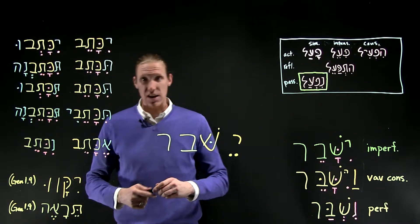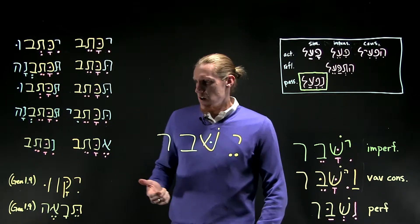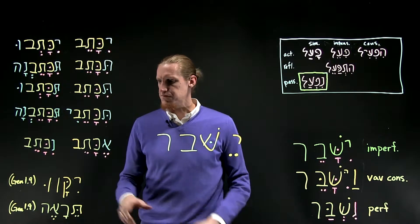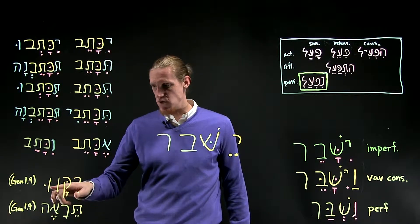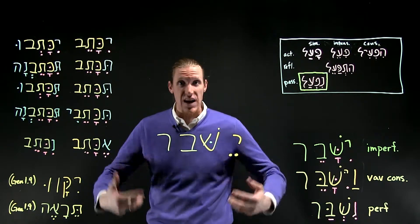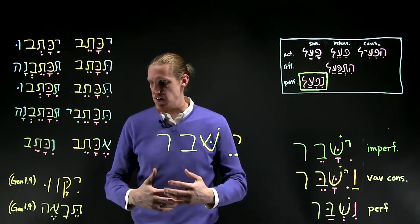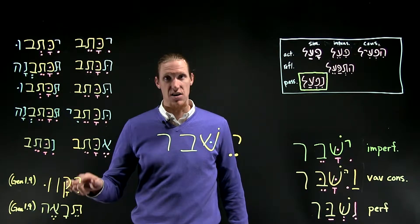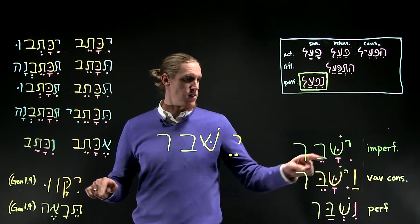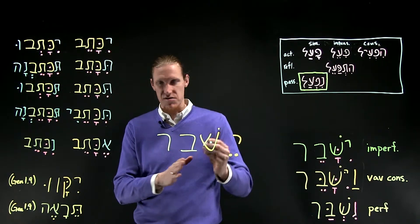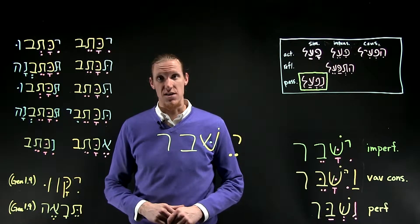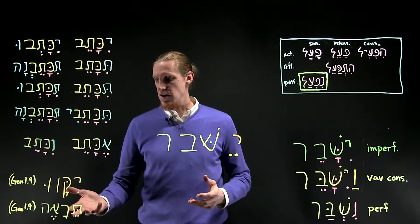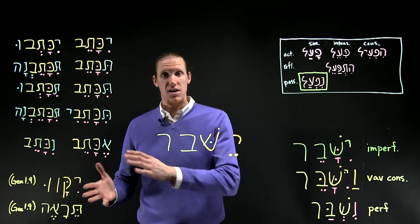Let's take a look at a couple of other examples that appear in this chapter's section of Genesis 1. Yiqqavu — 'it will be gathered' or 'let it be gathered' — this is the waters being gathered into a single place. You can see the hiriq under the prefix, the qamets under the first root letter, and the nun that was assimilated into the following letter — there is a dagesh forte in the qof. Yiqqavu is from Genesis 1:9.